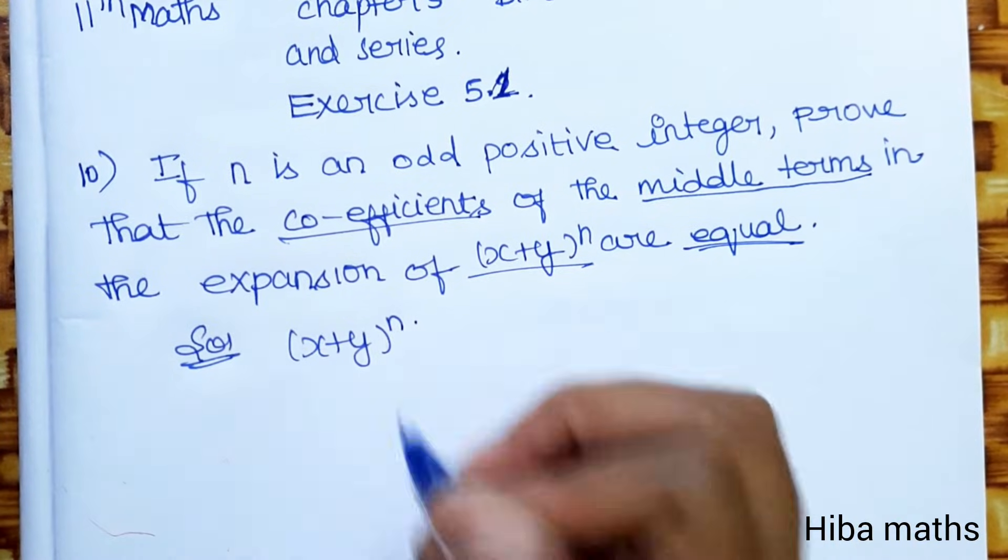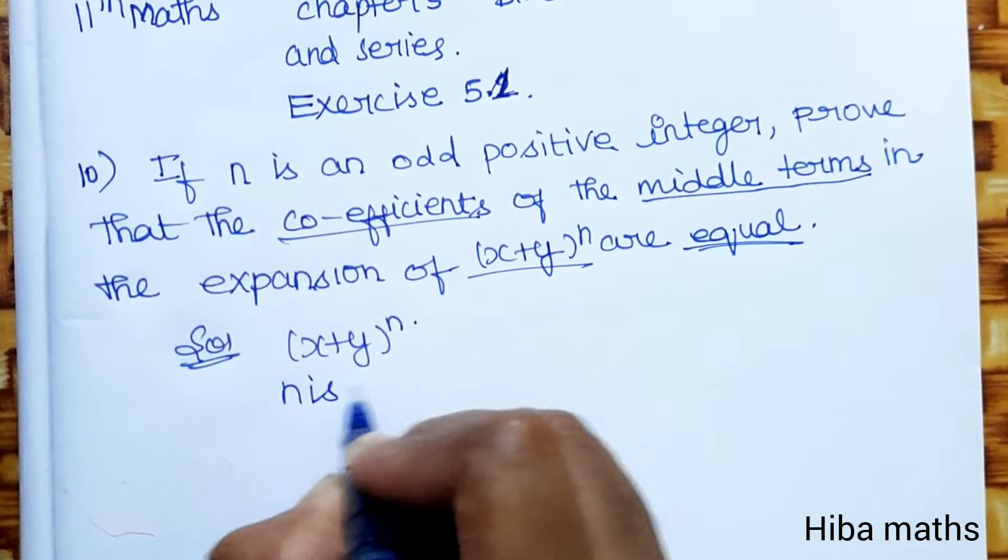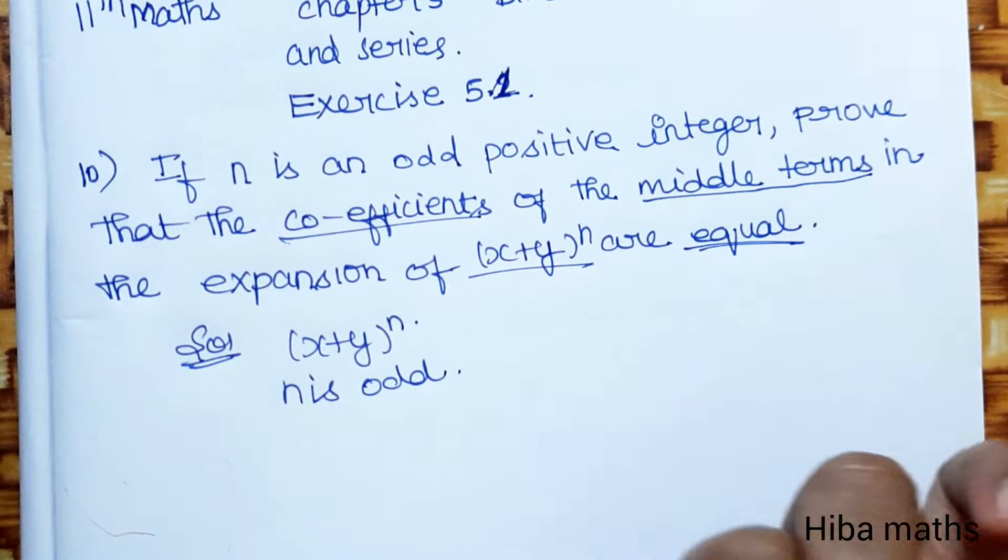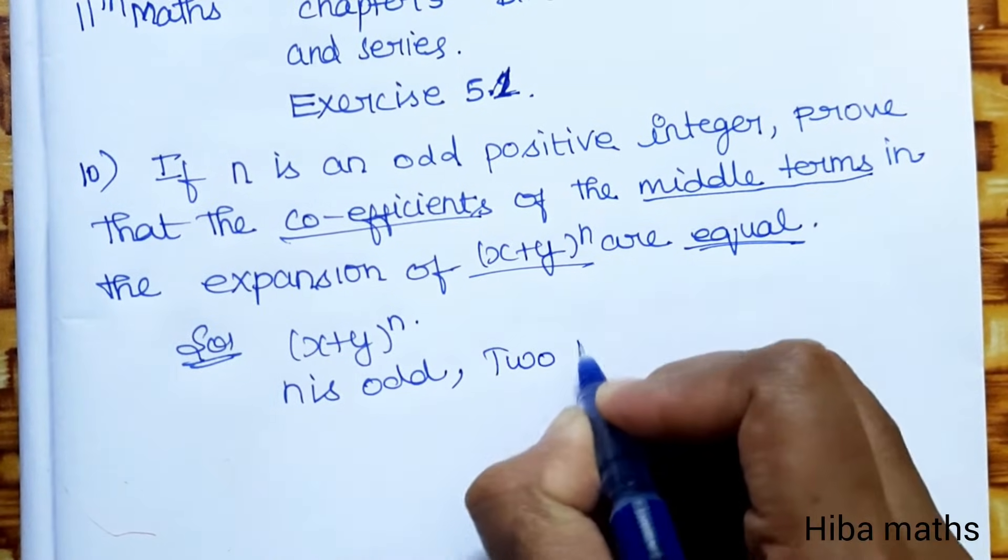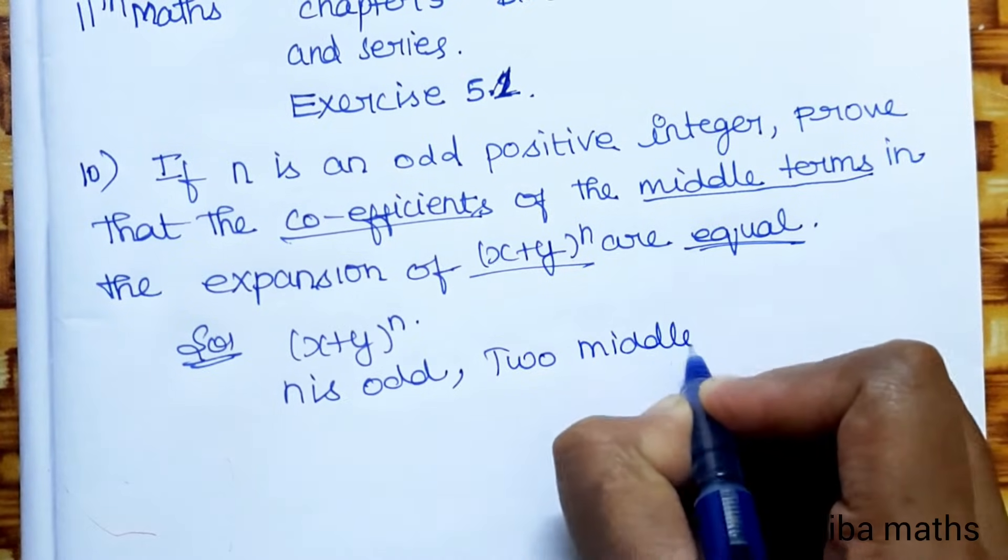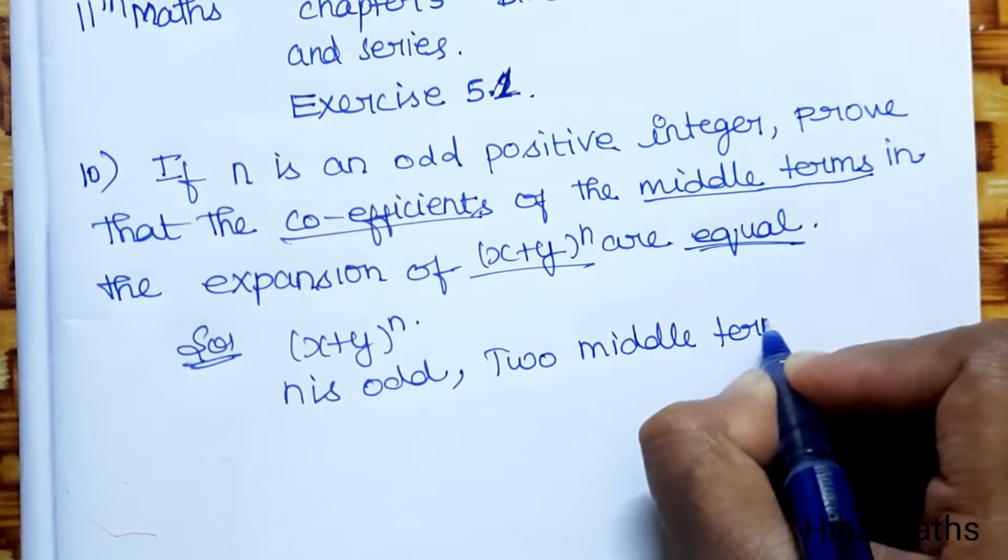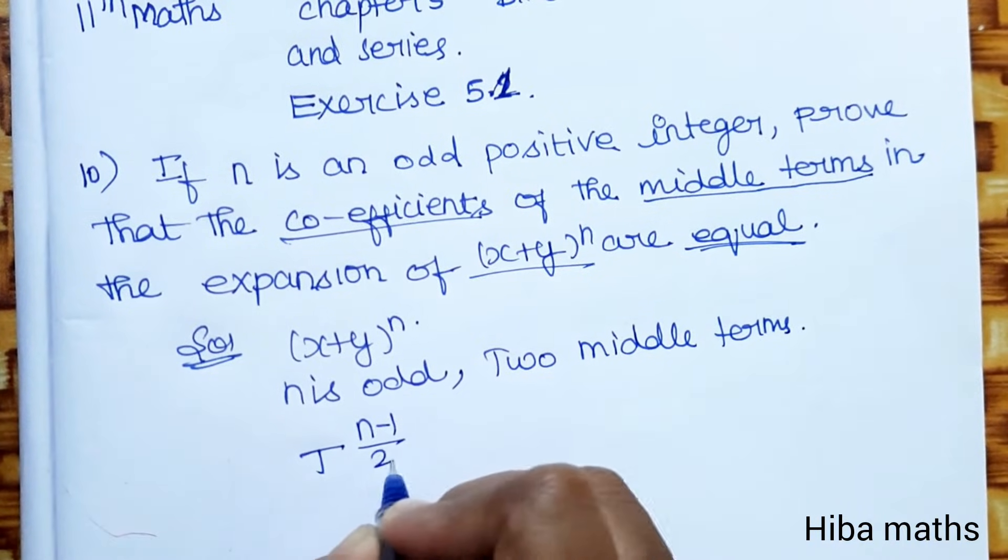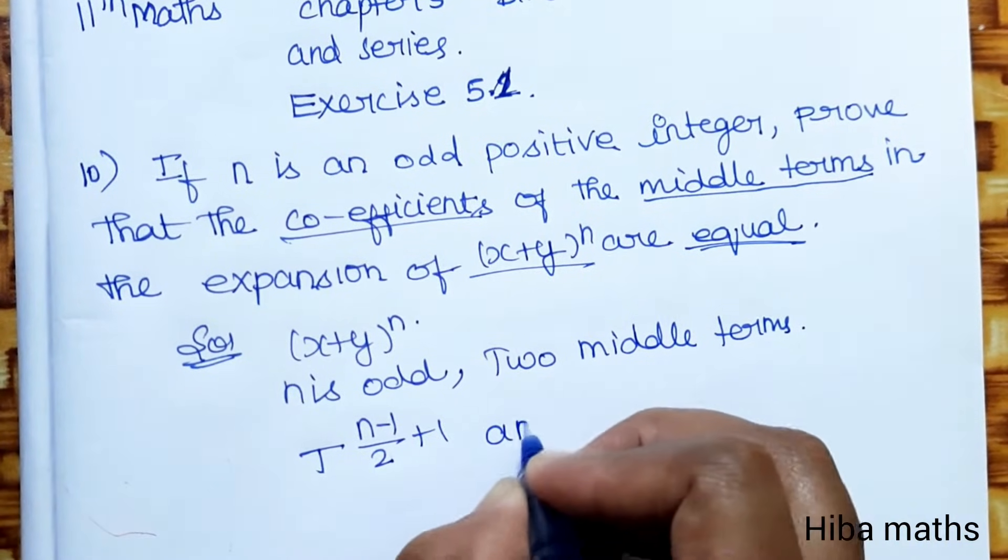There are two middle terms. n is an odd number, so if n is an odd number we need two middle terms. Two middle terms are possible: T^((n-1)/2 + 1) and T^((n+1)/2 + 1).